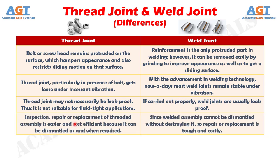Number 8: inspection, repair, or replacement of a threaded assembly is easier and cost efficient because it can be dismantled as and when required. Whereas, since a welded assembly cannot be dismantled without destroying it, repair or replacement is tough and costly.